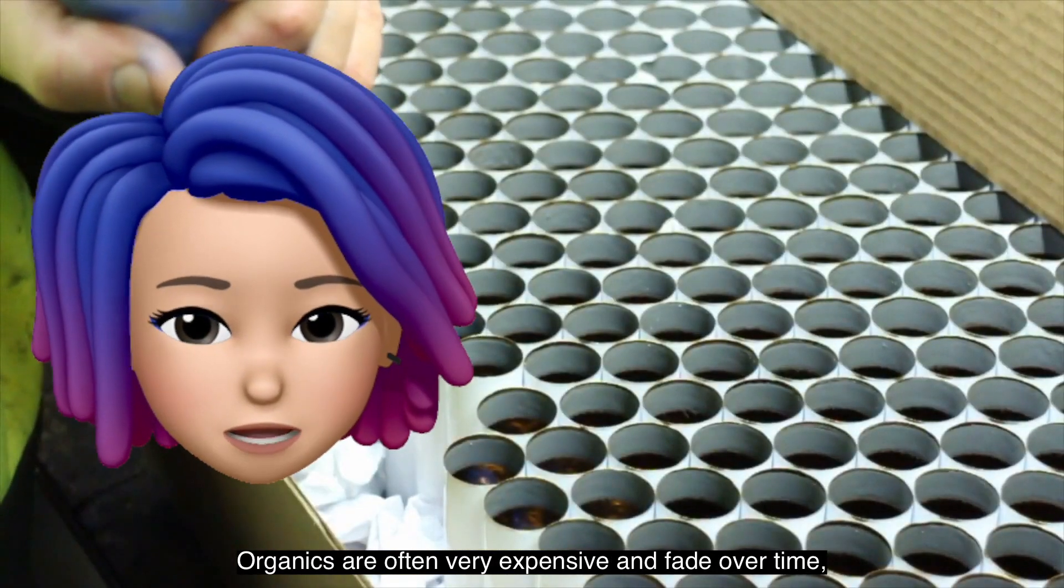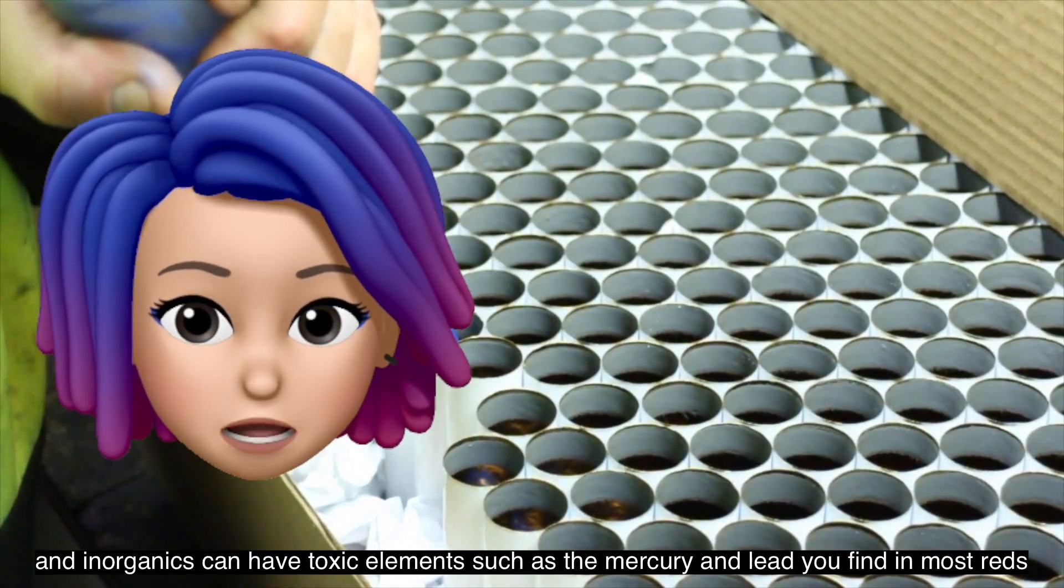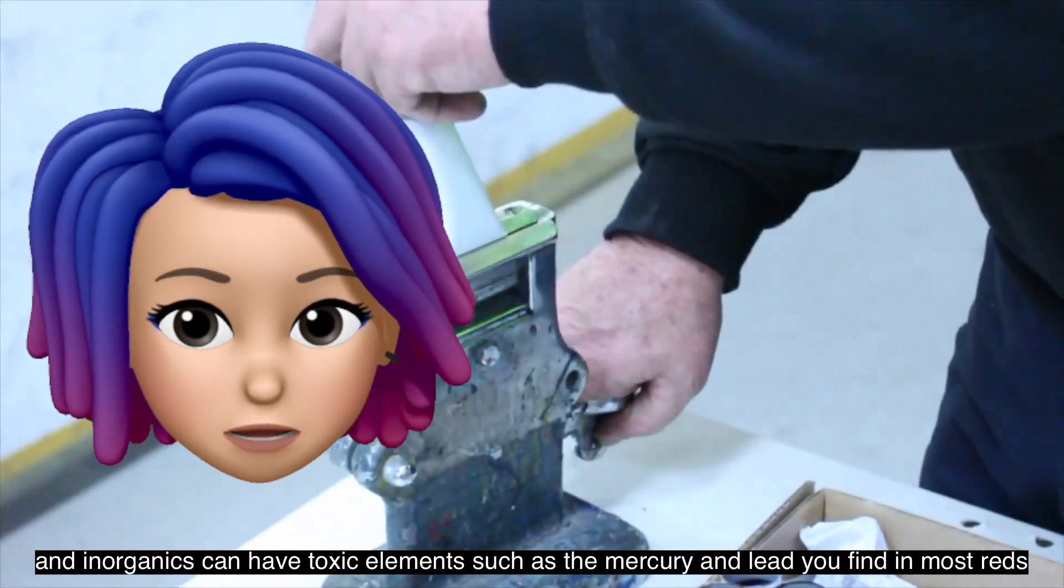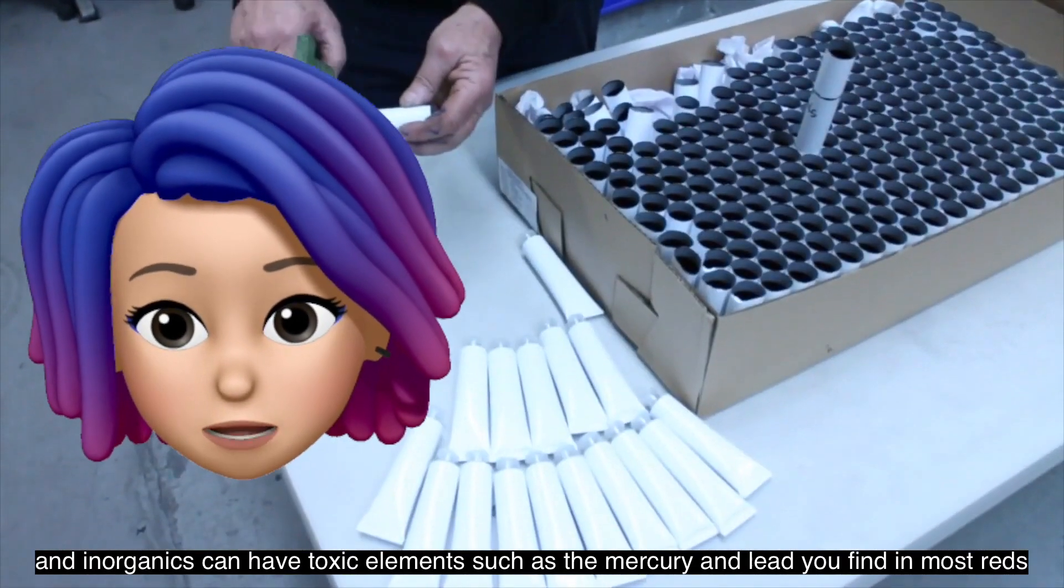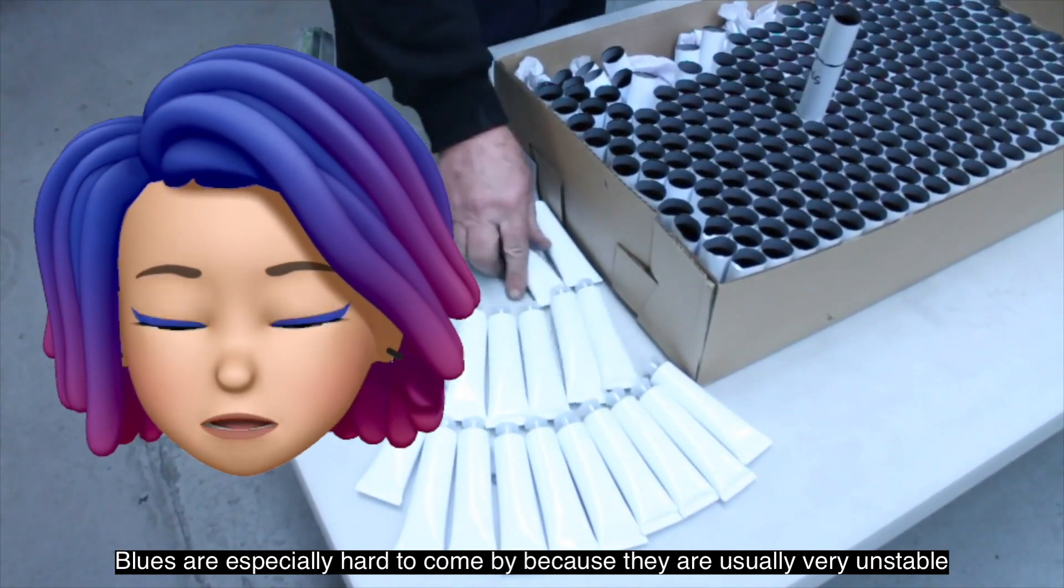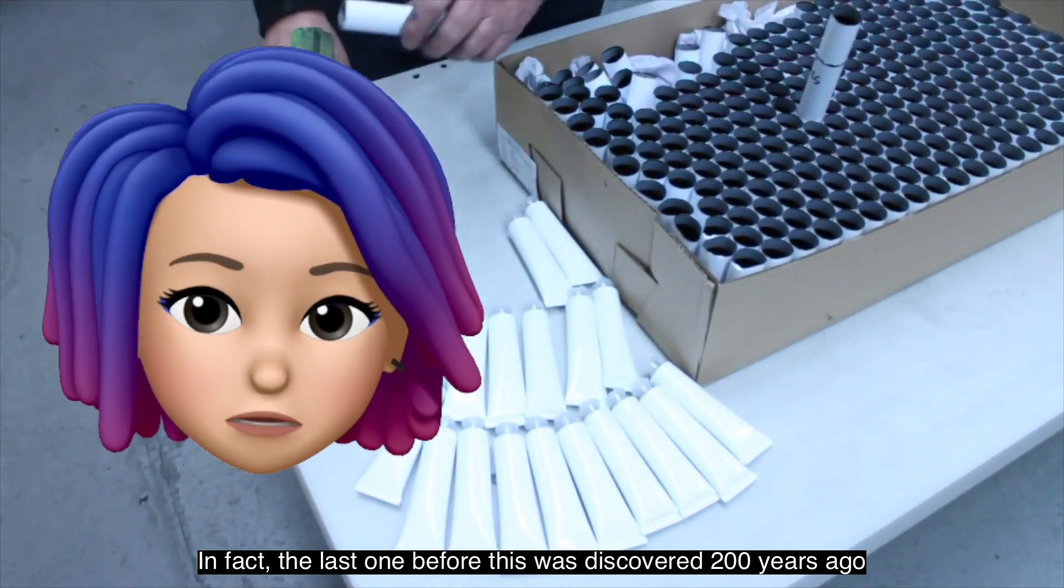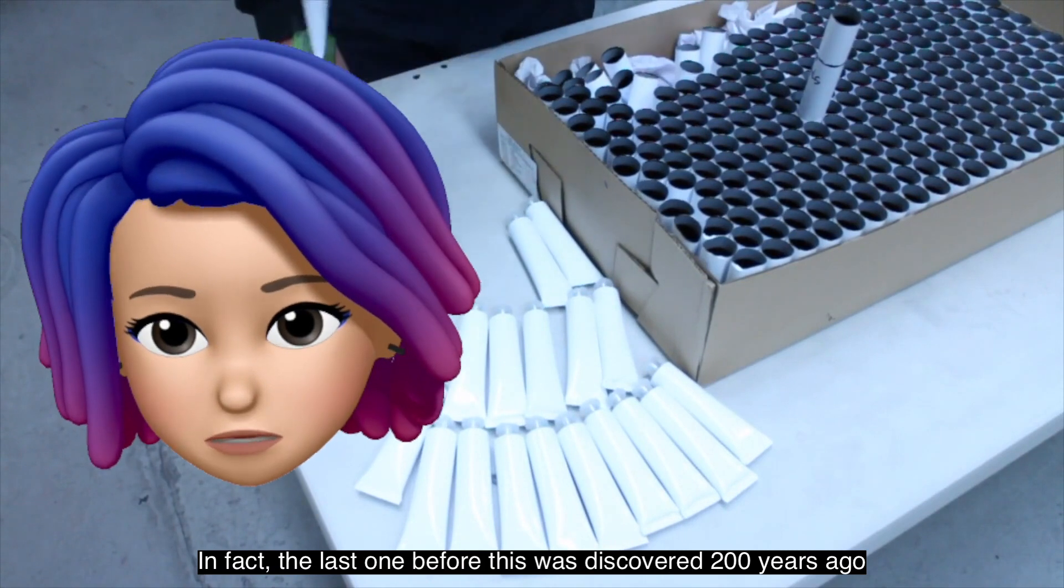Organics are often very expensive and fade over time, and inorganics can have toxic elements such as the mercury and lead you find in most reds. Blues are especially hard to come by because they are usually very unstable. In fact, the last one before this was discovered 200 years ago.